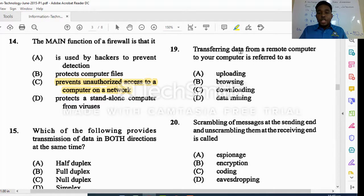Transferring data from a remote computer to your computer is referred to as what. Once you are transferring data from a remote computer to your computer, it is known as downloading. If you were transferring data from your computer to the remote computer, it would be known as uploading. We're not doing any data mining where we're collecting personal information, and we're not browsing.